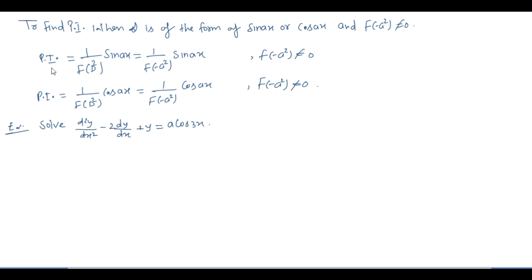PI निकालने के लिए: 1 upon f(D) of sin(ax) = 1 upon f(-a²) sin(ax) — यानि कि D² की जगह आपको minus a² put करना है। Condition यह है कि f(-a²) not equal to 0 होना चाहिए। Same rule cos(ax) के लिए भी है — D² की जगह minus a² put करना है।